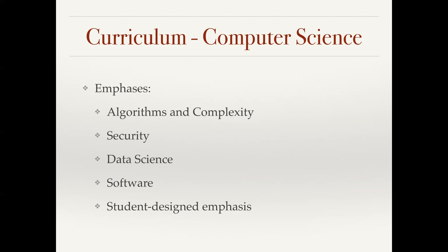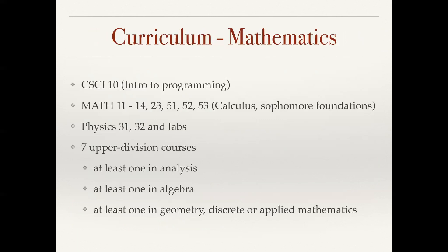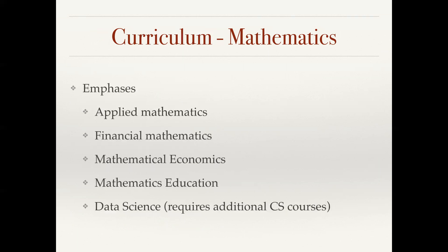Right now we have examples of student-designed emphases including studio art and graphic design, and one with biology. In mathematics, our students take the first programming class, the introductory programming class CS10, four quarters of calculus Math 11 through 14. Math 23 is a differential equations course. Math 51 is discrete mathematics, 52 is an introduction to abstract algebra, and 53 is linear algebra. These are our sophomore level foundation courses. The math majors take two quarters of physics and the associated labs, and then seven upper division courses with one in analysis, one in algebra, and one in geometry, discrete or applied mathematics. We have optional emphases in mathematics including applied mathematics, financial mathematics, mathematical economics, mathematics education for people who want to teach high school, and a data science emphasis which does require additional computer science courses.